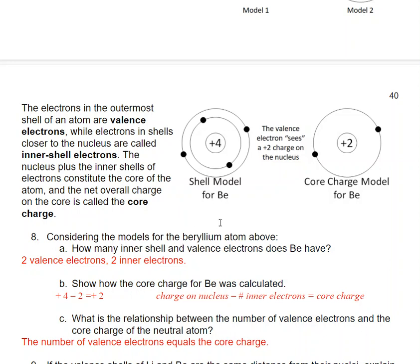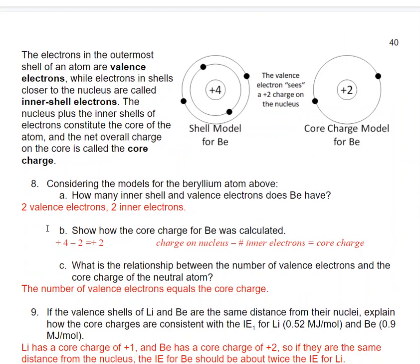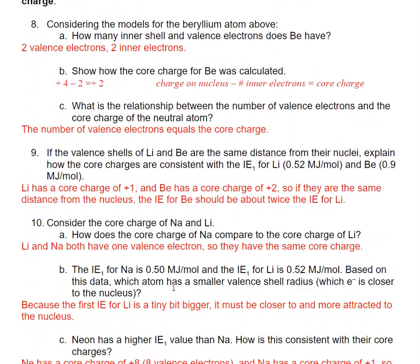Here we see the shell model for beryllium and the core charge model for beryllium. In the core charge model, all we see is the nucleus at the center, the core, and then the outer valence electrons. Beryllium has two valence electrons and two inner shell electrons. The core charge is calculated as the charge on the nucleus — which is +4 — minus the number of inner electrons, which is two, leaving a core charge of +2. So the number of valence electrons equals the core charge.